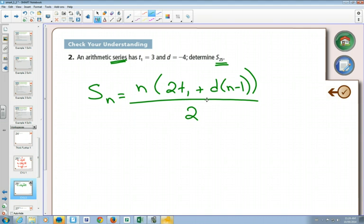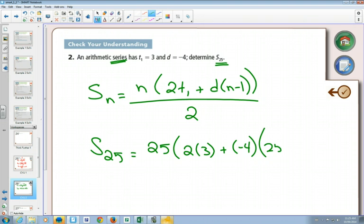Just double check if that's how your textbook wrote it. Good. I'm going to plug things in. To find the sum of the first 25: n will be 25, term 1 is 3, d is negative 4, n is 25 again, minus 1, divide by 2.